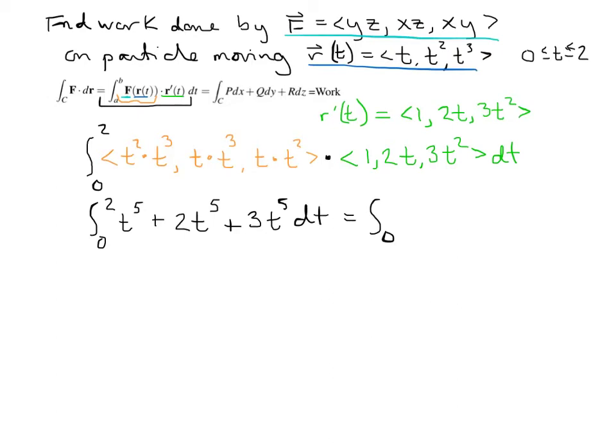Combine them all together, so 3, 4, 5, 6t to the 5th, integrate, so t to the 6th, then evaluate from 0 to 2, so we get 2 to the 6th, that would be 64. So that would be the work done by this force field, this given force field, on a particle moving in that direction. And so there's an example of using kind of that first formula, and I'm going to give you another example using the other formula.